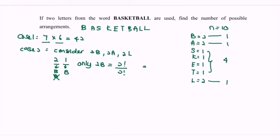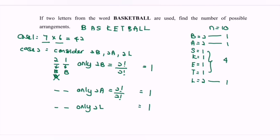Repeating for only two A's: 2 factorial over 2 factorial equals 1. And for only two L's: again 1. So Case 2 gives 3 total arrangements. Adding Case 1 and Case 2: 42 + 3 = 45. As a conclusion, there are 45 ways to arrange two letters from the word basketball. Thanks for watching.